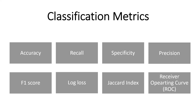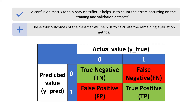Now we have the classification metrics. These include accuracy, recall, specificity, precision, F1 score, log loss, Jaccard index, and the Receiver Operating Curve. All these metrics are used depending on the use case. We also have the confusion matrix for a binary classifier, which helps us count errors occurring on the training and validation datasets. The four outcomes of the classifier help us calculate the remaining evaluation metrics.